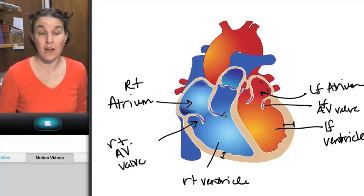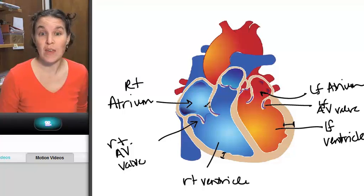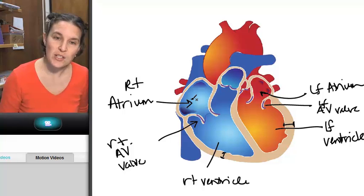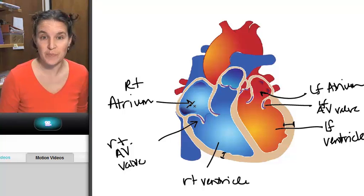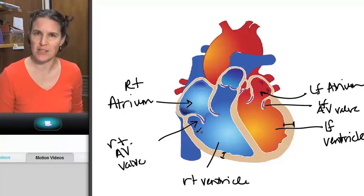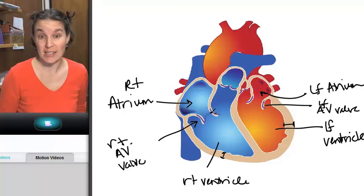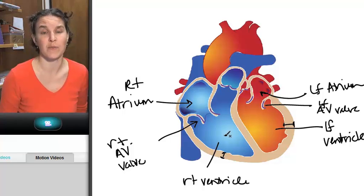AV valves let blood go from the atrium into the ventricle. But if the blood tries to go back into the atrium, the valve snaps shut. We can look at some hearts and look at those valves and it's pretty phenomenal.